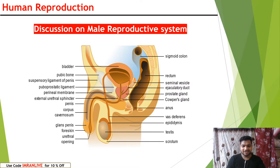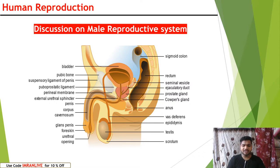Hello everyone, a very warm welcome to this wonderful session. Welcome to Anacademy. In this session we are going to start a new chapter from class 12 NCERT, that is human reproduction. We will discuss about the male reproductive system, female reproductive system, pre-fertilization actions, fertilization, after fertilization, and embryonic development — everything we will study in this topic.